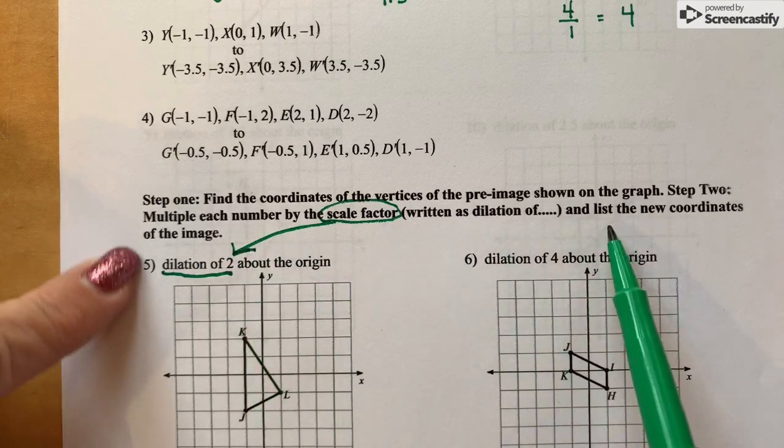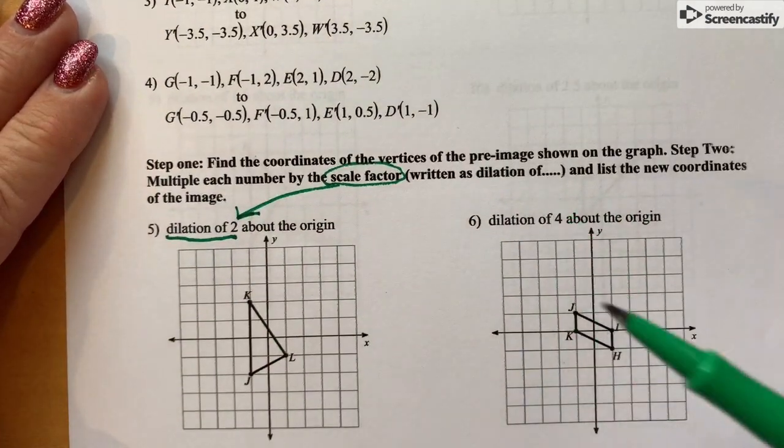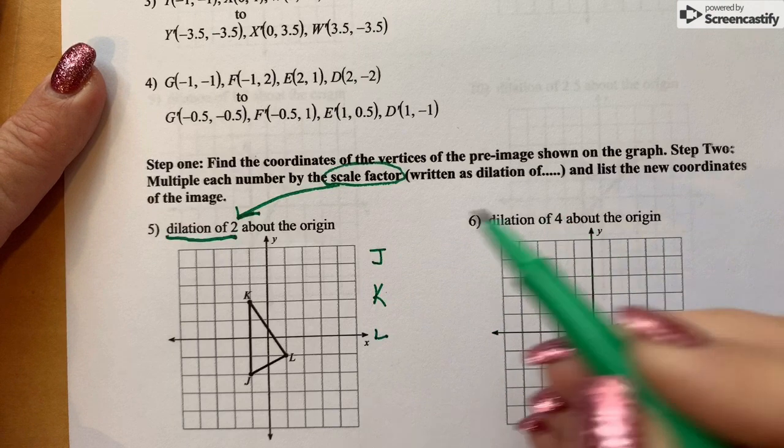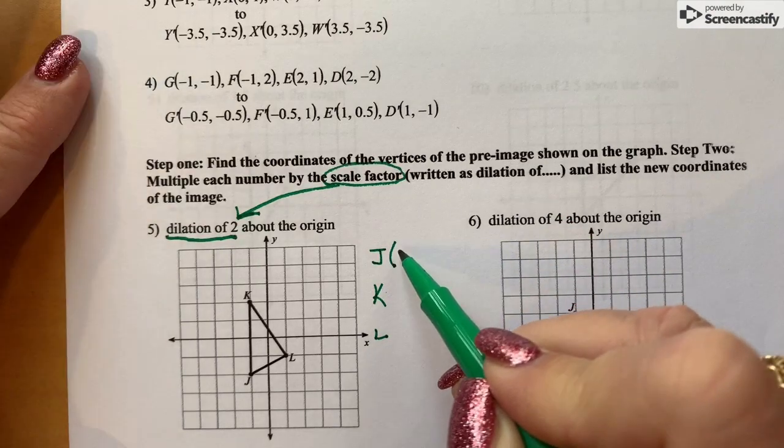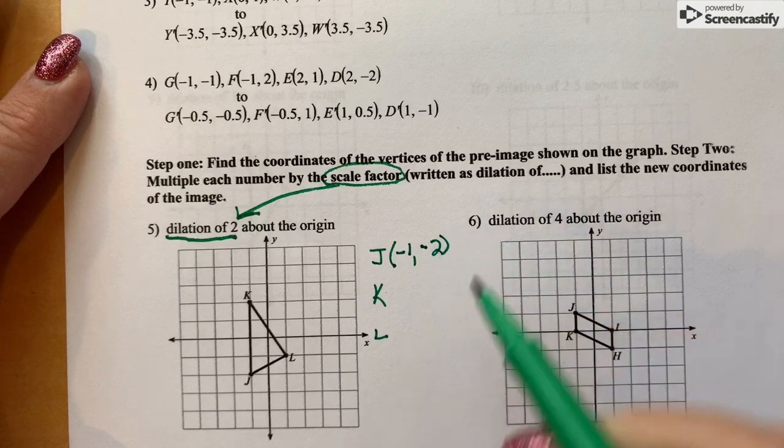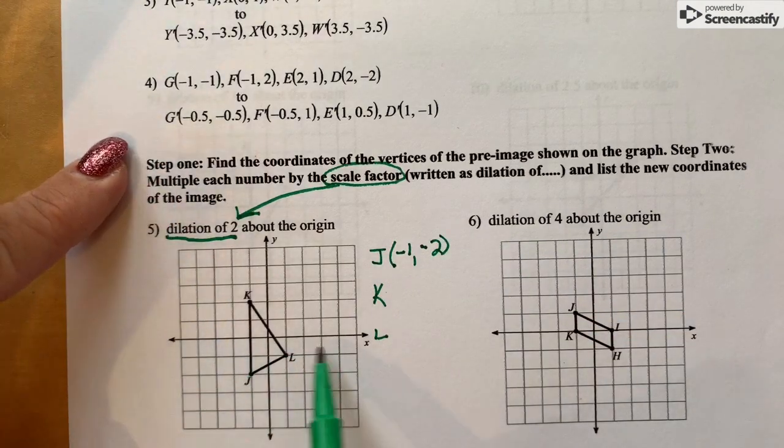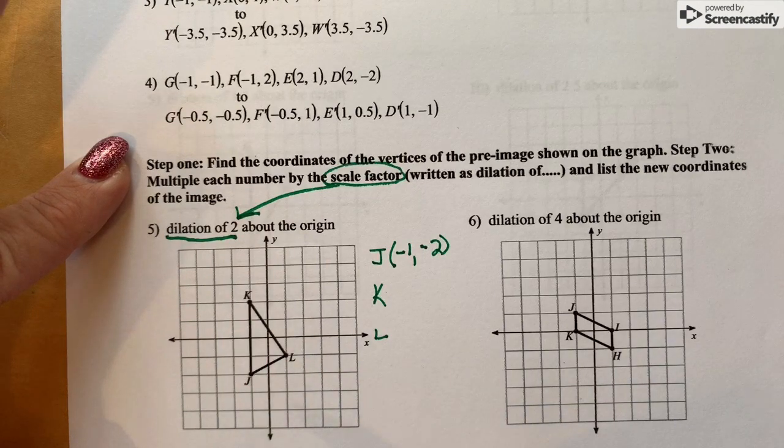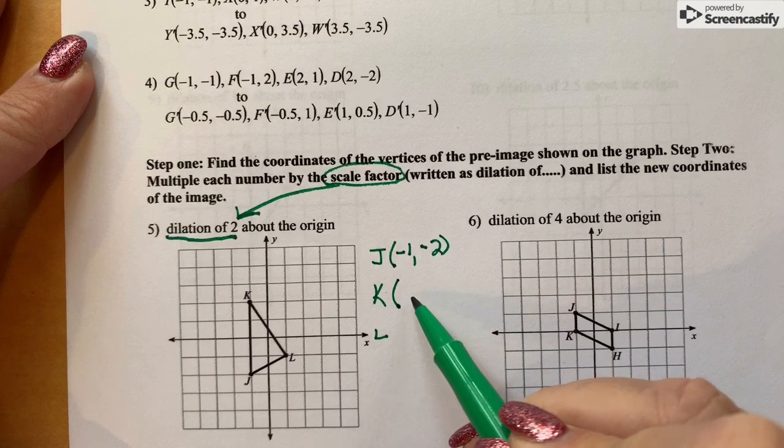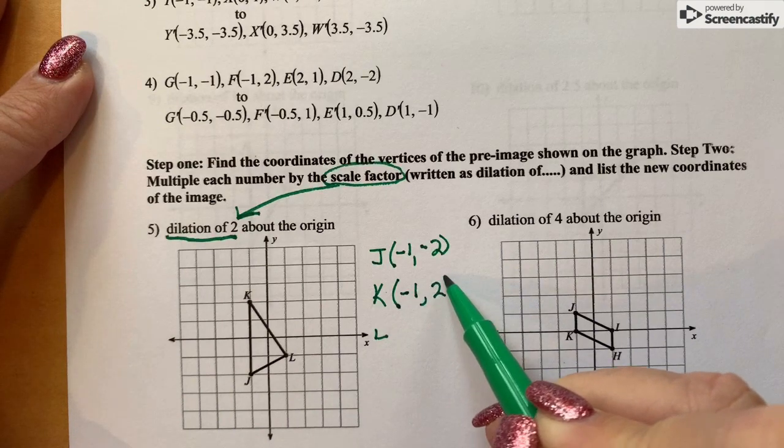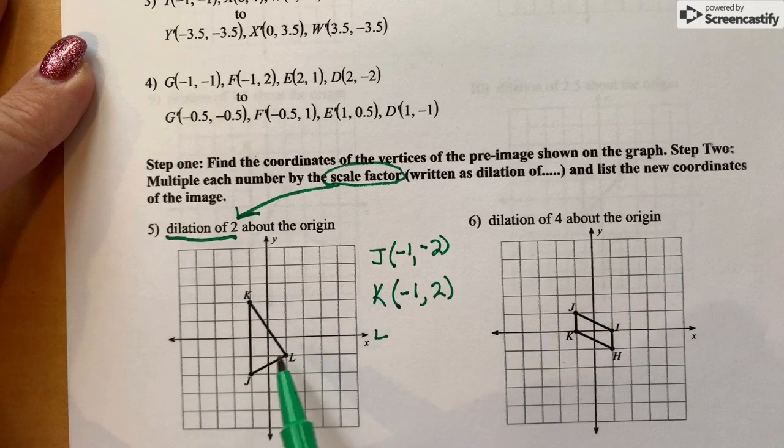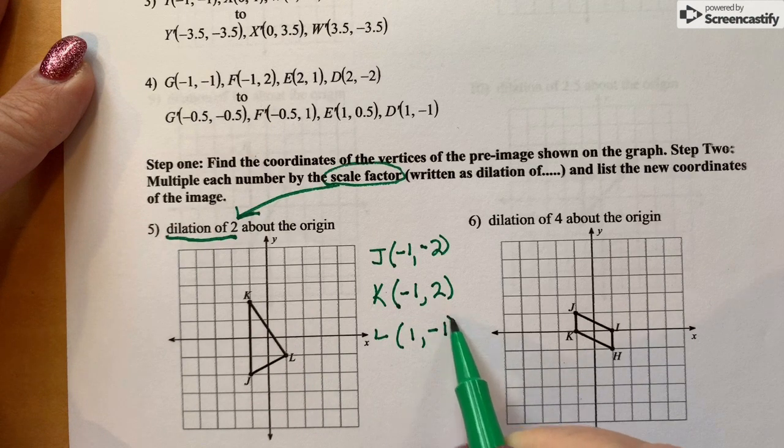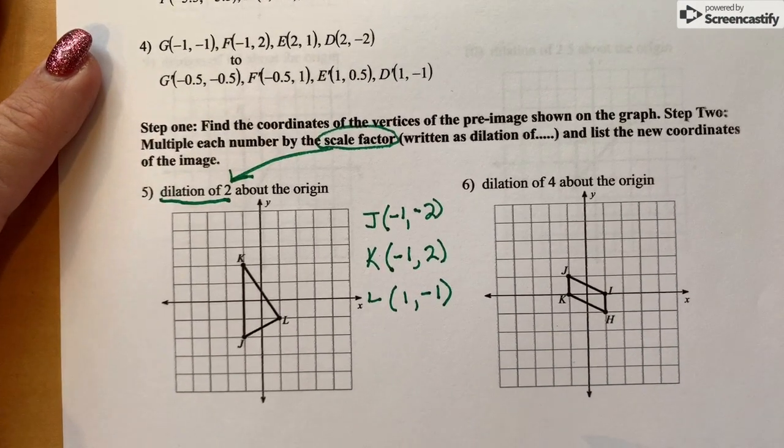And list the new coordinates of the image. So I'm going to put these in alphabetical order: J, K, L. The coordinates of J are negative 1, negative 2. Remember we go the left and right direction on the x-axis and then down or up on the y-axis, the vertical direction. K is negative 1, 2, and L is 1, negative 1. Those are the coordinates of those vertices.